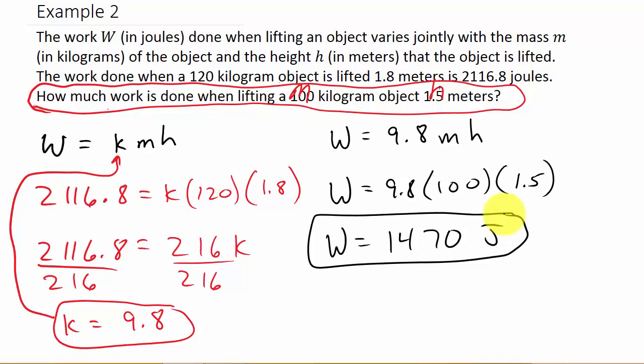Okay, so you can see the main thing is setting up your equation, figuring out what k is, based on what they're giving you, which was in this line here. And then plugging in information to find what they're asking you for. But you've got to find k first.